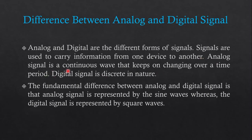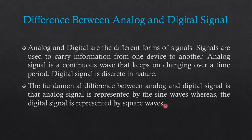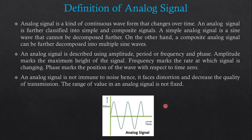An Analog Signal is a Continuous Wave that keeps on changing over a time period — we already studied the example of Temperature in the previous video. A Digital Signal is Discrete in Nature. The fundamental difference between Analog and Digital Signal is that Analog Signal is represented by a Sine Wave, whereas the Digital Signal is represented by Square Waves.